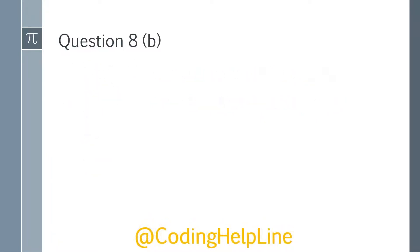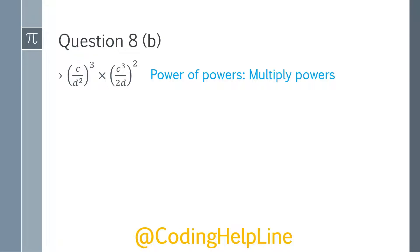Now question 8b. In 8b, we have two terms we need to multiply for simplification: parenthesis (c / d²) power 3 multiplied by parenthesis (c³ / 2d) squared. The same rule applies — power of power. We will expand the parenthesis and then multiply the related terms. So expansion gives c³ and this becomes d⁶ (2 multiplied by 3 becomes 6).